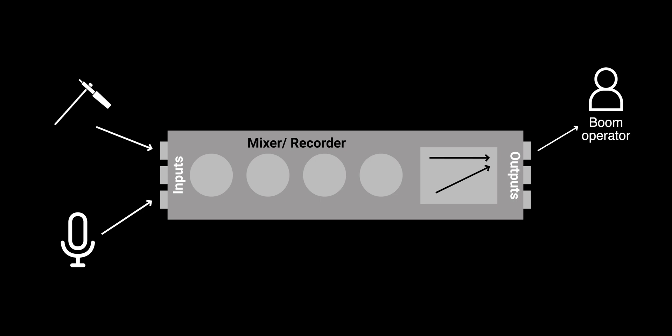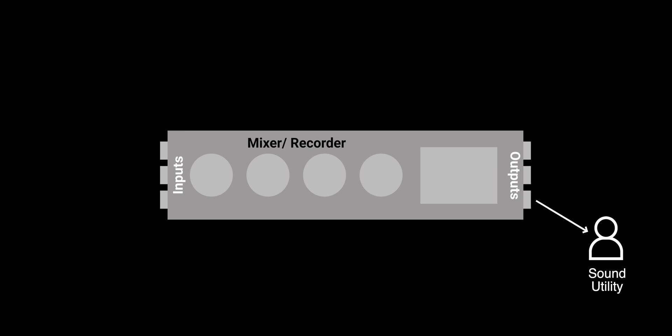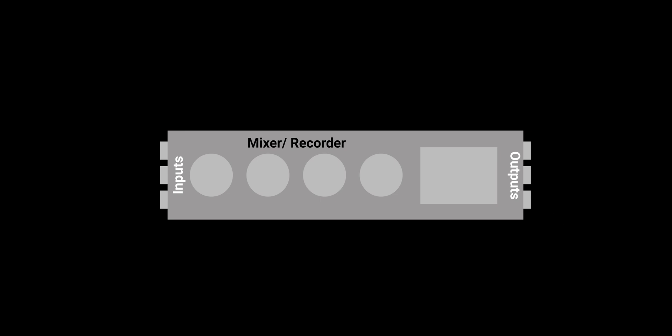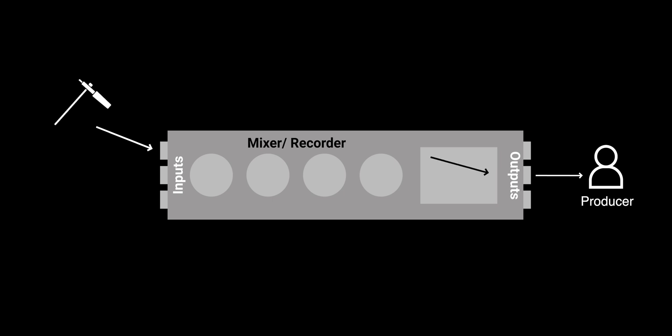On bigger sets, there's a person in the sound department called a sound utility. This person is usually responsible for, among other things, hiding lavalier microphones and wireless packs on each of the actors. For your utility, you might want a mix of all the wireless lavalier microphones plus the microphone you have at the mixer, so the utility can hear the wireless lav mics and hear you when you need them to check on an actor's lavalier mic for clothing rustle or to change batteries in one of the wireless packs. You might also want a separate mix of just the boom microphone for a producer or script supervisor — you can't send them the same mix as your boom operator because they don't need to hear all the instructions you're sending to your boom operator.